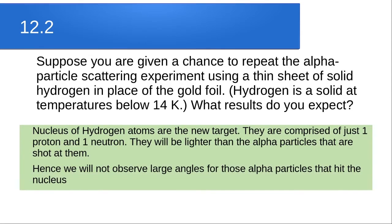The nucleus of hydrogen atoms will be the new target, and they are comprised of just one proton — they will be lighter than the alpha particles shot at them. Hence one of the major observations will be that there will be no large angles of deflection observed for those alpha particles that hit the nucleus.